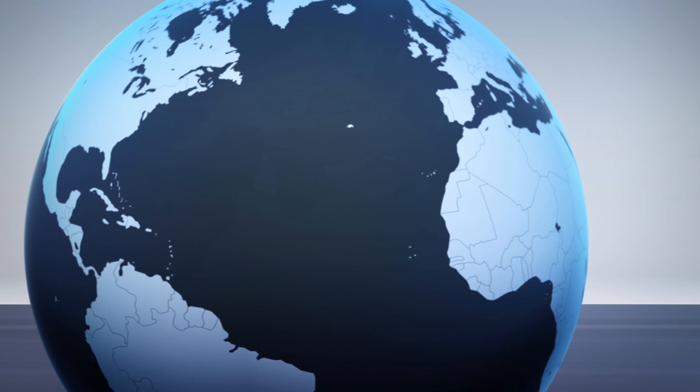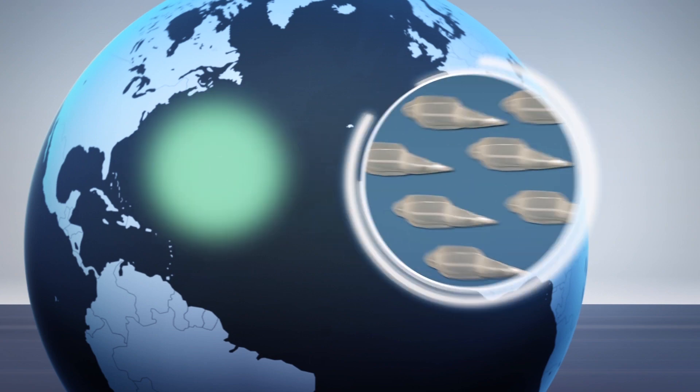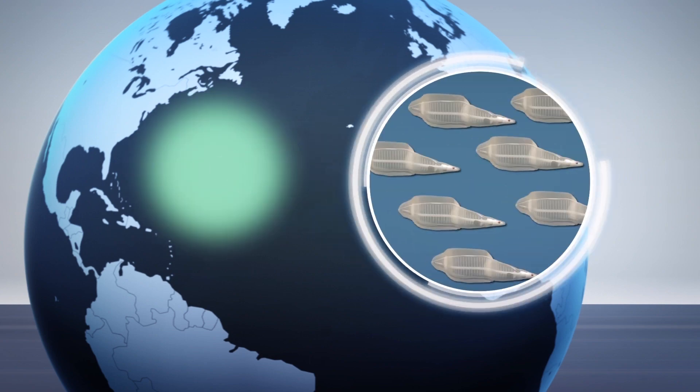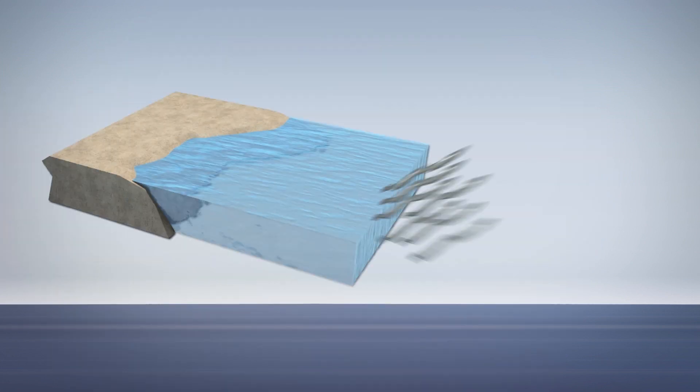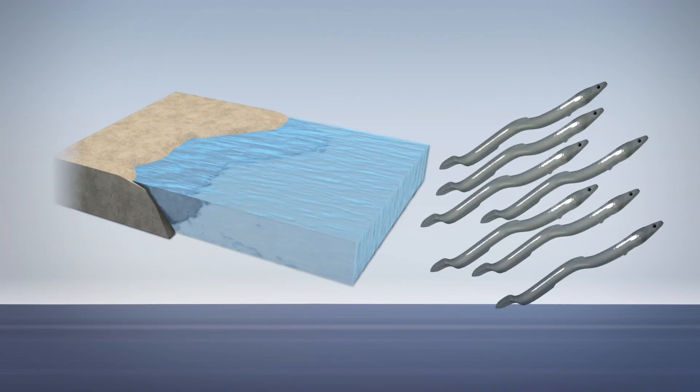European eels are a migratory species that hatch in the Sargasso Sea and as larvae travel 5,000 kilometers to Europe's continental slope. There they metamorphosize into a transparent larval stage called glass eel and continue to Europe's coast and enter estuaries.